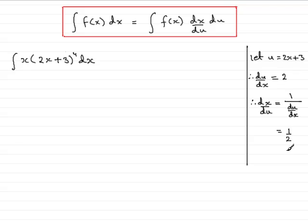So we now have dx/du as being a half. We can go back to this integral and using this method, we can change the variable from x's to u's by first of all just replacing dx with dx/du by du. So we have x, then the 2x plus 3 to the power 4, and dx then is being replaced by dx/du by du. So that becomes a half du.